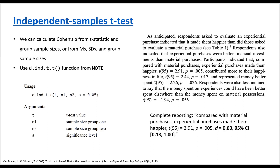Here I have an example taken from a classic article published in 2003, where two researchers investigated whether participants find experiential purchases happier than material purchases. They hypothesized that spending money on experiences would make people happier than spending on specific items, and they found supporting evidence. As they reported, participants indicated that compared with material purchases, experiential purchases made them happier: t equals 2.91 and p equals 0.005. They did not report effect sizes, and we want to know how large the effect size is.